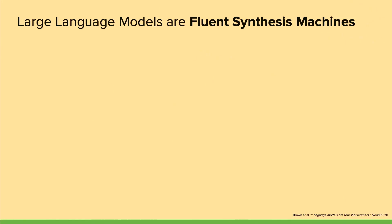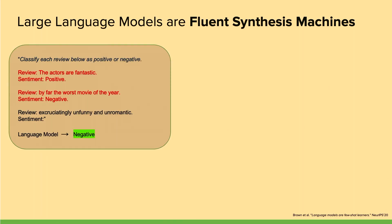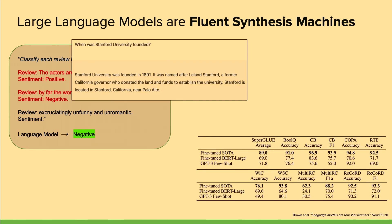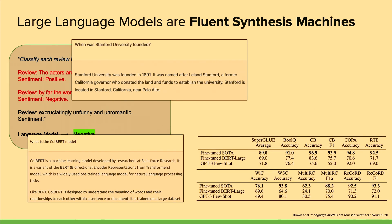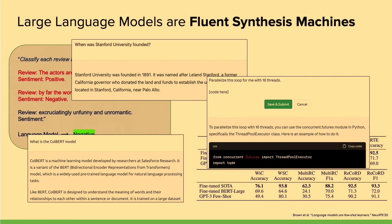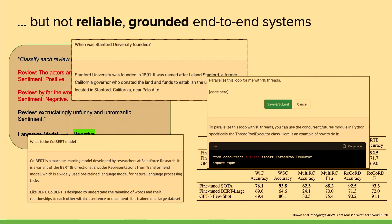What we've observed over the last couple of years is that large language models are fluent synthesis machines. They're able to generate very convincing-looking text across a wide variety of domains. But the problem is that these large language models are not yet reliable, grounded, end-to-end systems.